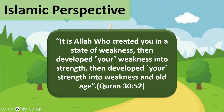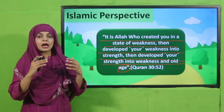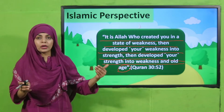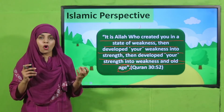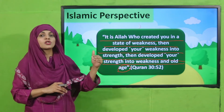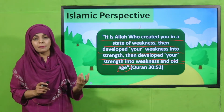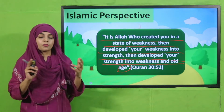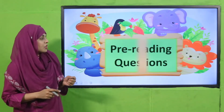From the Islamic perspective, Allah says in the Quran: 'It is Allah who created you in a state of weakness, then developed your weakness into strength, then developed your strength into weakness and old age.' This clearly shows that every living thing — humans, animals, and plants — starts weak when born, then grows and becomes strong, and then moves toward old age and again becomes weak. This is how the growth process works in all living things.